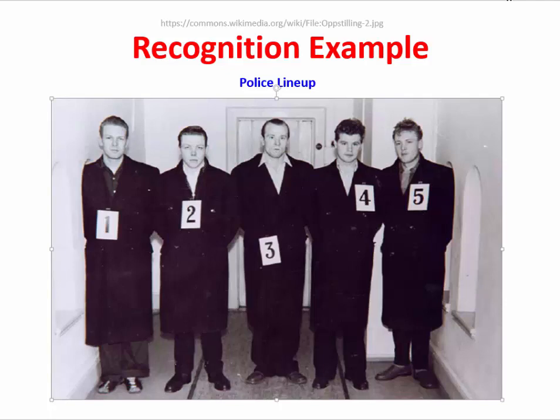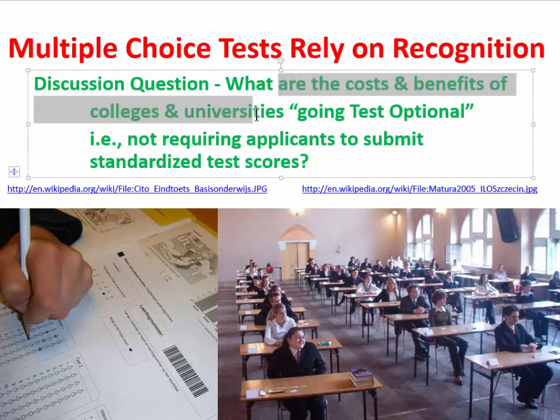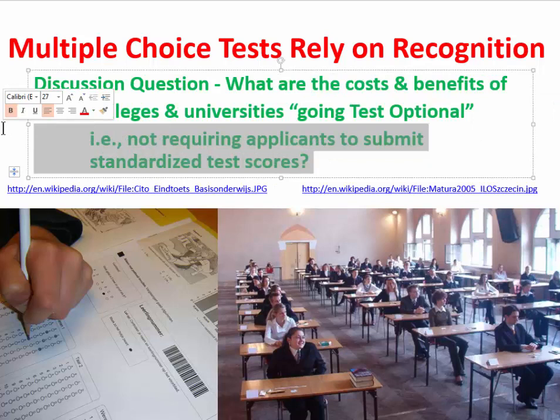Another type of recognition test occurs in standardized tests — you can think of the SAT or the ACT — which simply require you to select one of five options, like the lineup we just saw. An interesting question is to what extent there are costs and benefits of colleges going test optional, not requiring applicants to submit standardized test scores. Some people note that standardized test scores rely heavily on recognition, yet in everyday life we have to do memory tasks that go far beyond recognition and require all different kinds of recall. Others counter that this is at least a good indicator of how accomplished a student is. A portion of that debate revolves around the distinction between recognition versus recall as two different ways of indexing memory.